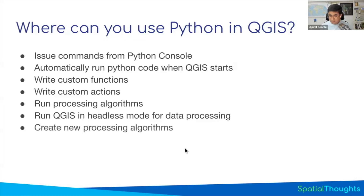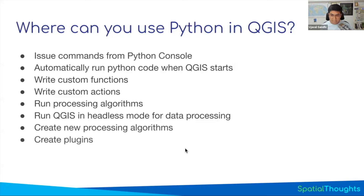You can write new processing algorithms. If you wish QGIS had a particular tool that doesn't exist, you can implement that new algorithm yourself using Python. And of course, you can create plugins and distribute them internally or even to the public.